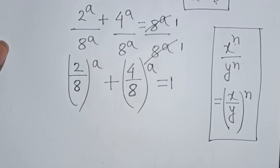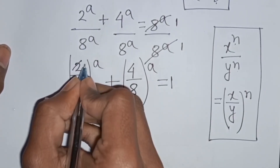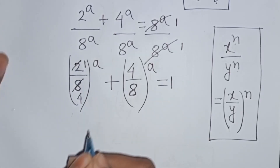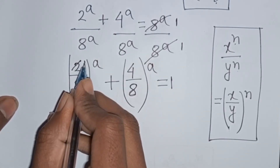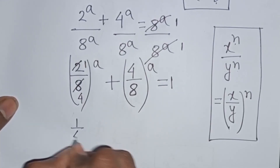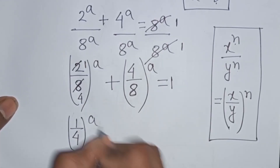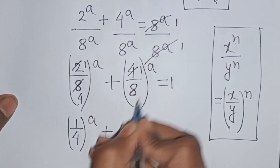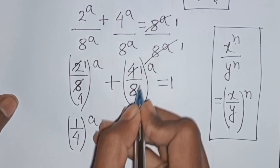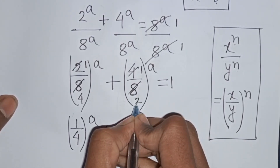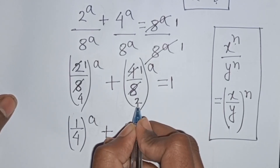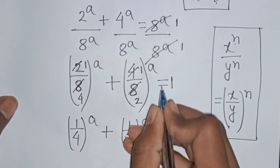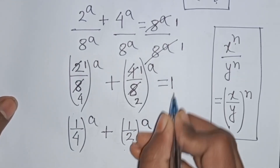Now 2 divided by 8 means it will be 1/4, and 8 divided by 2 means it will be 4. So here (1/4)^a plus, then 4 divided by 4 means 1, and 8 divided by 4 means 2. So we have (1/4)^a plus (1/2)^a is equal to 1.